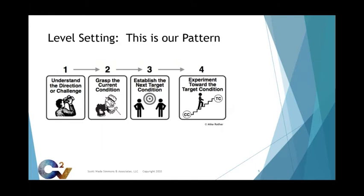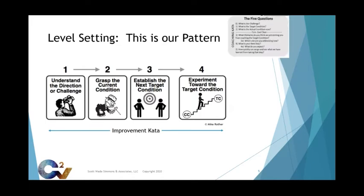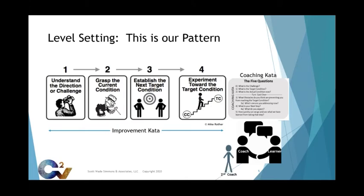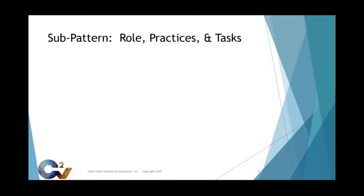Here's the pattern we're discussing today, the framework we're operating within. The improvement kata pattern supported by the coaching kata pattern. The three players connected to these two patterns are the learner, first coach, and second coach. I believe there is a sub-pattern the learner, first coach, and second coach follow around roles, practices, and tasks.